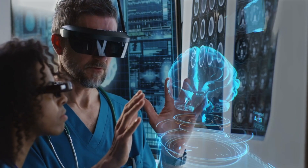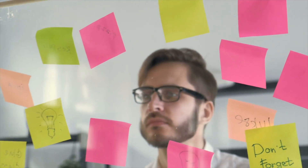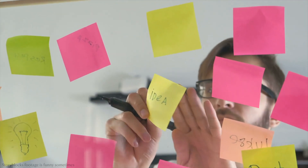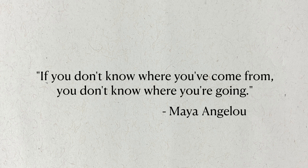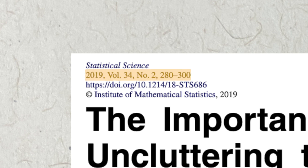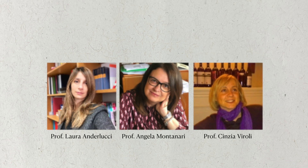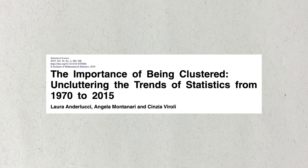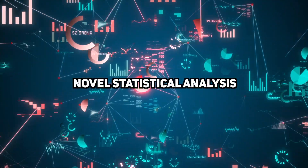A lot has happened in statistics since Pearson established the first journal for the field, so much so that it's hard to appreciate just how far the field has progressed. Maya Angelou once said that we won't know where we're going if we don't know where we've been. This paper tries to describe what this would mean in the context of statistics. It was originally published in 2019 in the Journal of Statistical Science by three professors from the University of Bologna in Italy. Instead of just being a general essay about broad topics, this paper actually uses novel analysis to study the history of statistics.